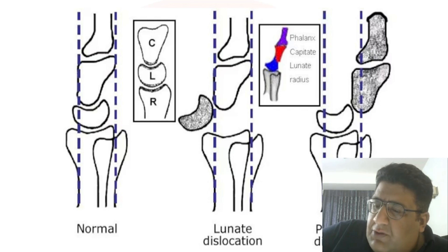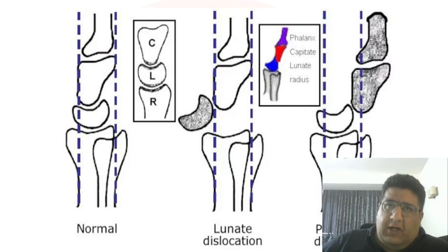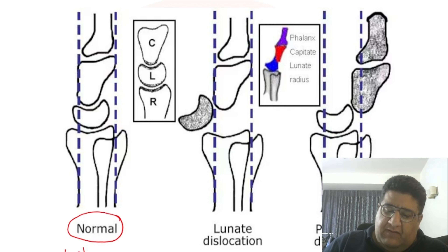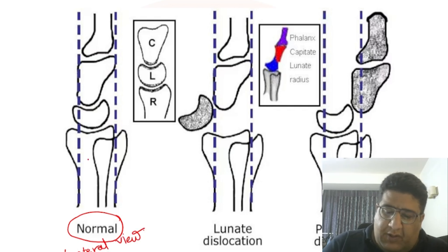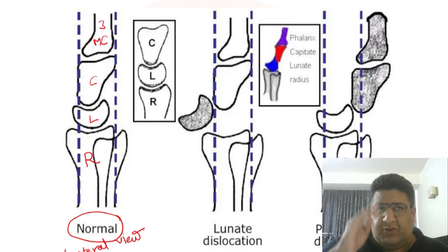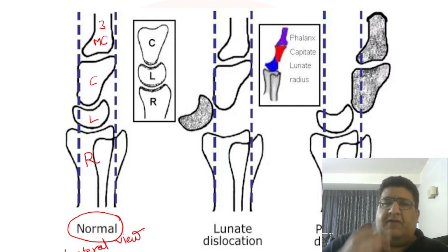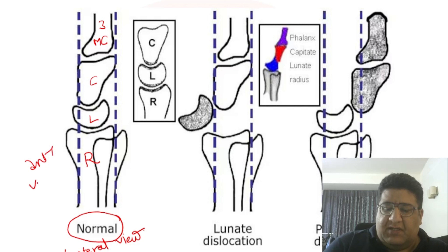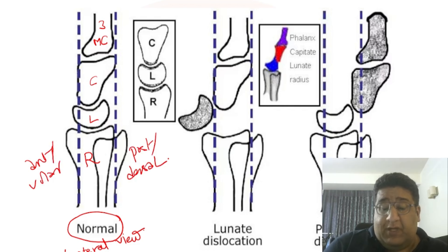I'm sure you are all able to see something on your screens. This is what you have in the lateral view. What you are looking at right now is radius, then lunate, then capitate, then the third metacarpal. With some anatomical orientation: in this lateral view, one direction is anterior or volar, and the other direction is posterior or dorsal.